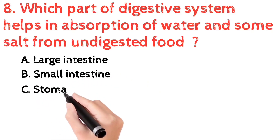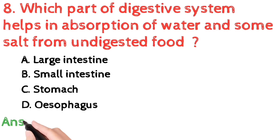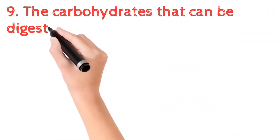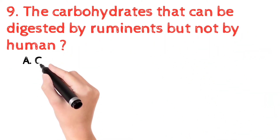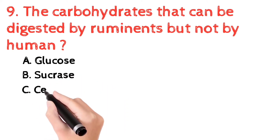Question number 8: which part of the digestive system absorbs water and some salts from undigested food? The correct answer is the large intestine. Its main function is absorption of water, minerals, and certain drugs, and secretion of mucus which helps in adhering waste material.